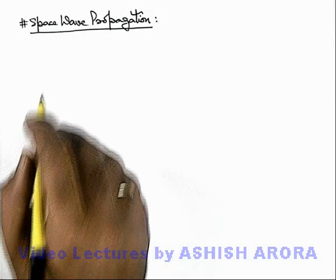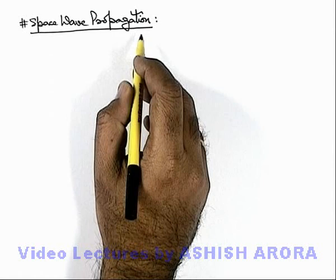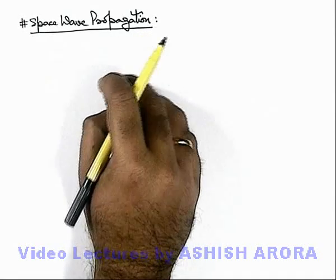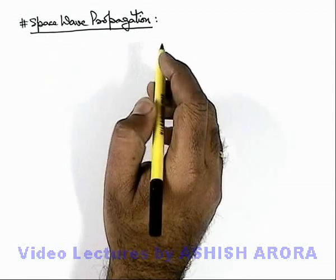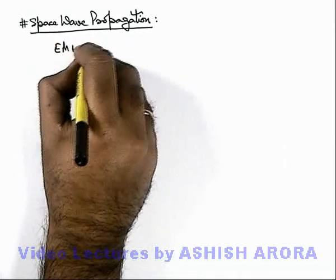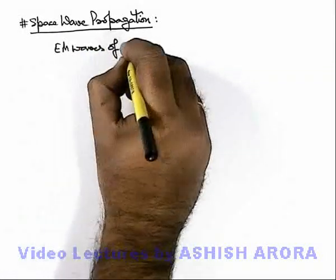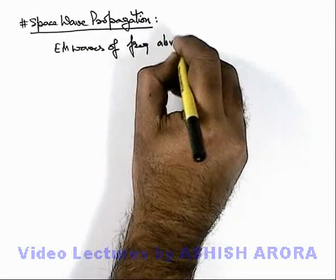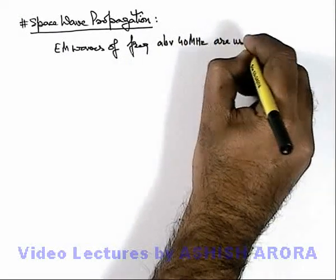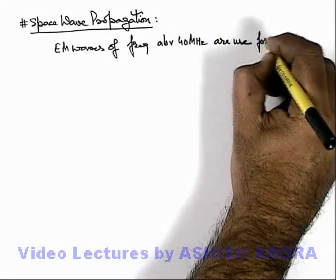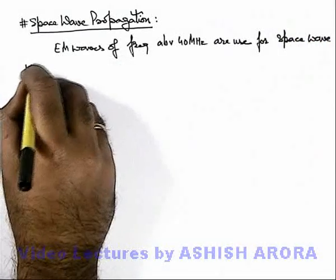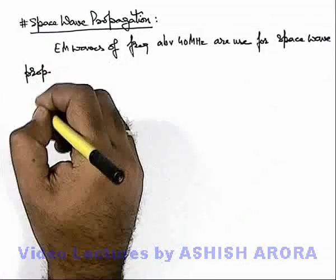Let's study about space wave propagation. We've discussed that up to 30 megahertz frequency, waves reflected by ionospheric layers are used as sky waves. Electromagnetic waves of frequency range above 40 megahertz are used for space wave propagation, which are not reflected by ionospheric layers.